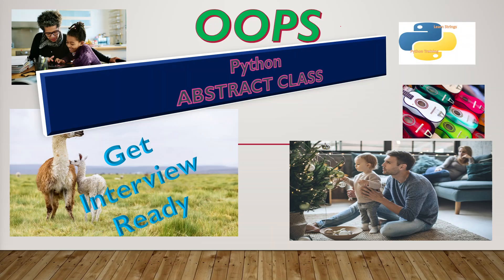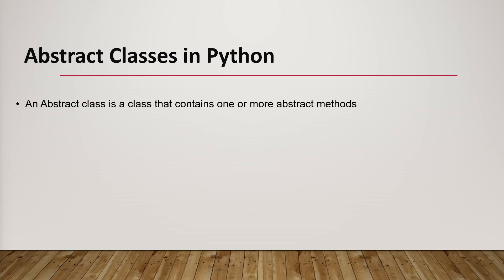Hello friends, welcome back to our channel. Today we are going to learn about abstract classes. Abstract class is part of object-oriented programming, and we will learn more about it with an example. An abstract class is a class that contains one or more abstract methods.